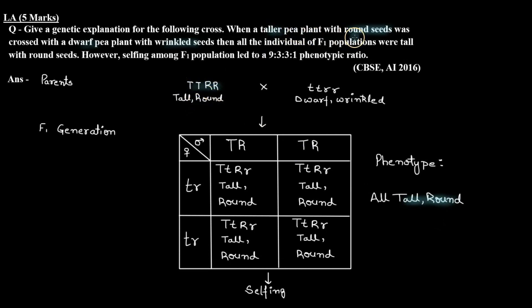And we know that if after test cross all plants have dominant phenotype, then the genotype is homozygous dominant. So this is why our tall pea plant with round seed genotype will be capital T, capital T, capital R, capital R.